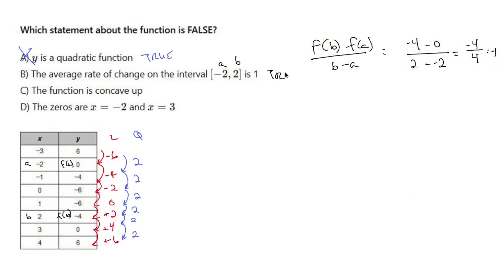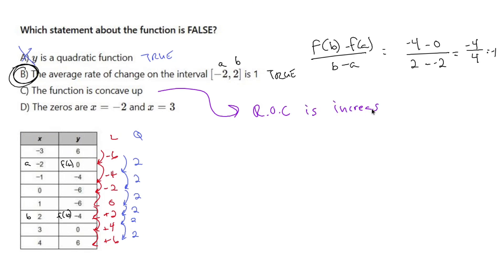We were supposed to get 1, but we got negative 1. This is the lie. Now let's make sure the other statements are good. In order to find if something is concave up, you find out if the rate of change is increasing. Looking at the linear values — negative 6, negative 4, negative 2, 0, 2, 4, 6 — those numbers are increasing, so this is concave up. That's a true statement.